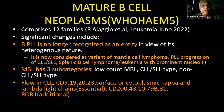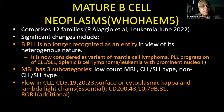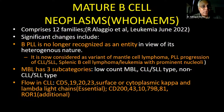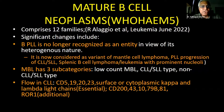Significant changes in WHO 2022: BPLL is no longer recognized as an entity. In view of its heterogeneous nature, it is now considered a variant of mantle cell lymphoma, or a PLL progression of CLL-SLL, or part of the family of splenic B-cell lymphoma/leukemia with prominent nucleoli. The monoclonal B-cell lymphocytosis (MBL) now has three subcategories: low count MBL, CLL-SLL type MBL, and non-CLL-SLL type MBL. There has also been standardization of flow parameters in CLL — essential markers include CD5, CD19, CD20, CD23, and surface or cytoplasmic kappa and lambda light chains.